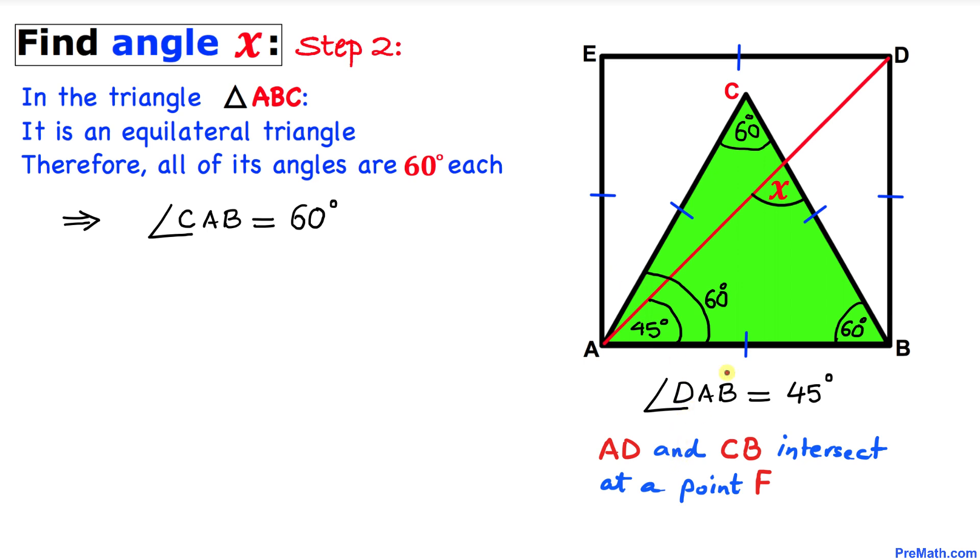Before we proceed any further, let's assume that this diagonal AD and this side length CB intersect each other at this point. Let me call this point F. Now we can see that this angle CAF is equal to angle CAB minus angle DAB. So let's go ahead and calculate this angle CAF.